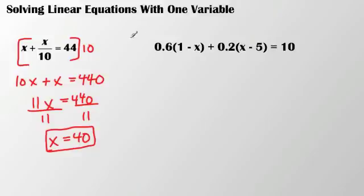I'm going to go ahead and distribute this out, so I get 0.6 minus 0.6x, and I have 0.2. Again, using the distributive property here, I have plus 0.2x. 0.2 times 5 is 1, so that's a negative 1 equals 10.